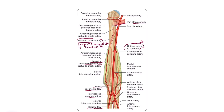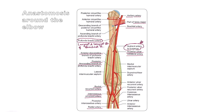At the mid shaft on the medial side, the brachial artery also gives the superior ulnar collateral artery, which runs behind the medial intermuscular septum in the posterior compartment in the lower half of the arm. Below, it anastomoses with the posterior ulnar recurrent artery, a branch from the ulnar artery, behind the medial epicondyle of the humerus.